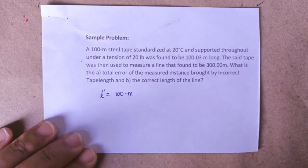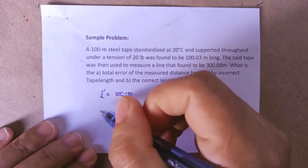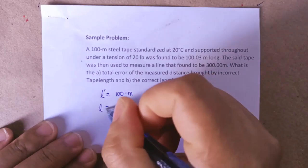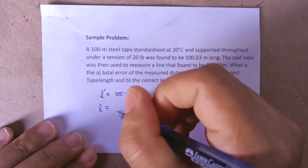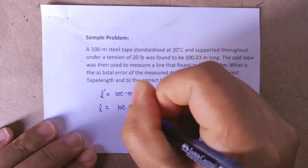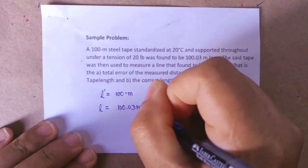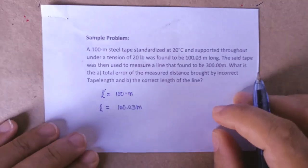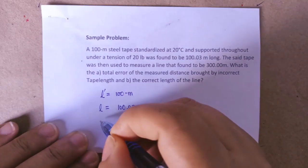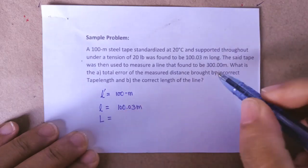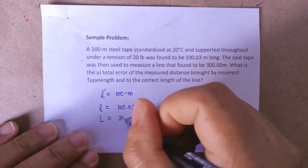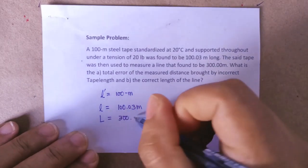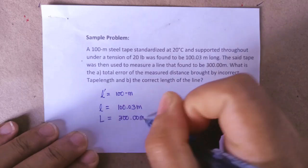The nominal length is l prime, and we have l which is the actual length of 100.03 meters. Also, we are given a distance of the measured line which is 300.00 meters.